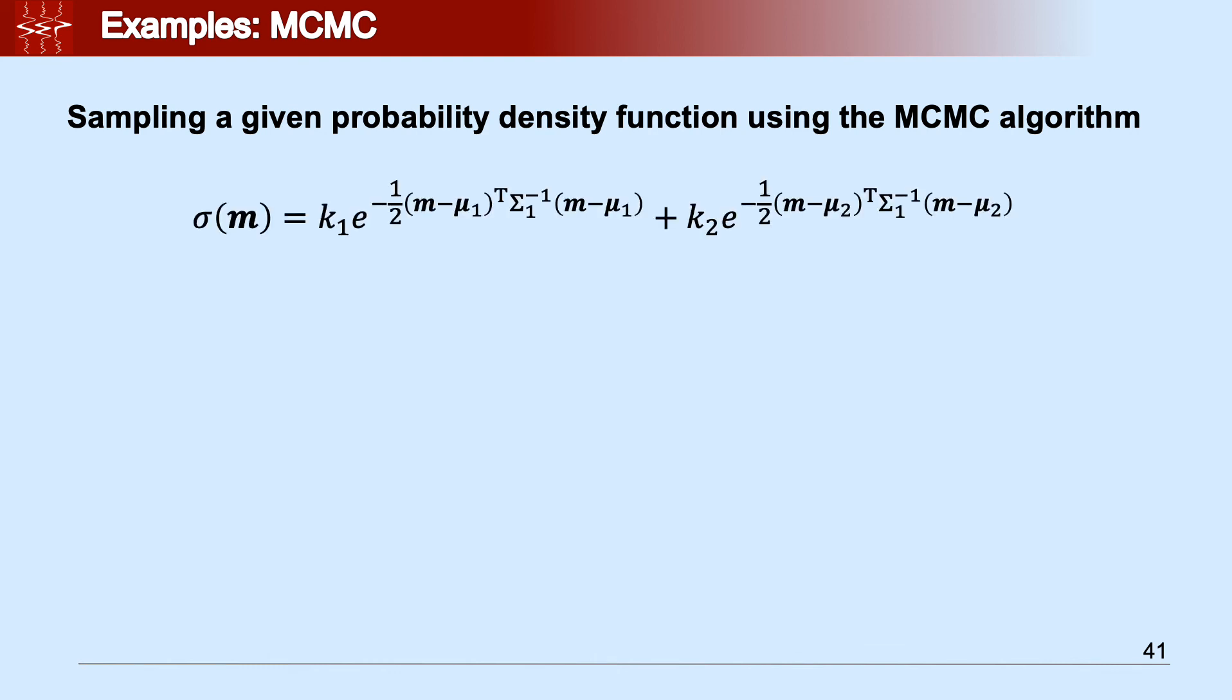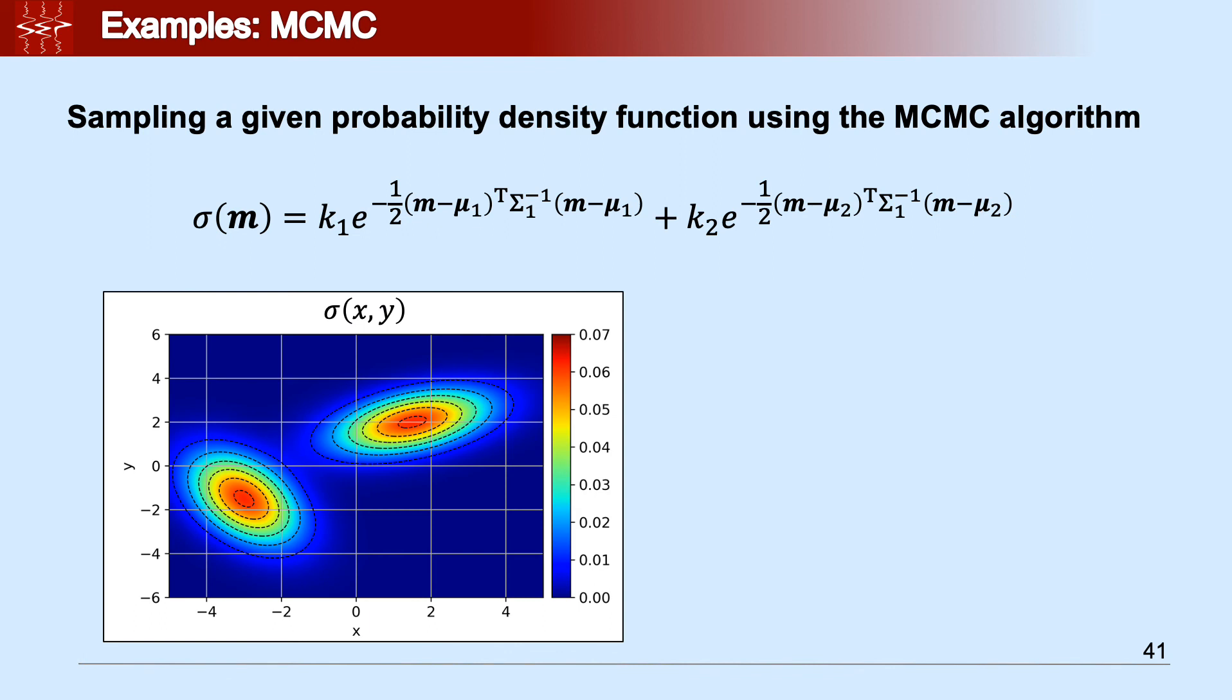In this example, we're going to use the sum of two multivariate Gaussian distributions. If we perform an exhaustive search, we can actually plot it, and you can see that the two Gaussians are well separated from one another. Now the question is, can MCMC extract samples that follow this probability density function?